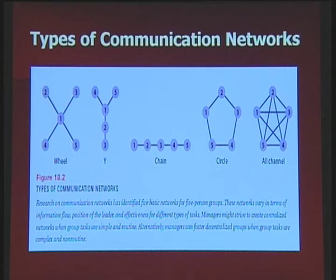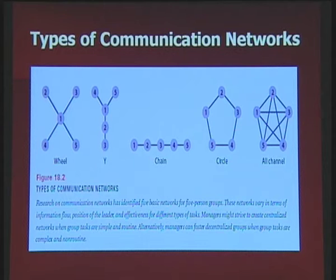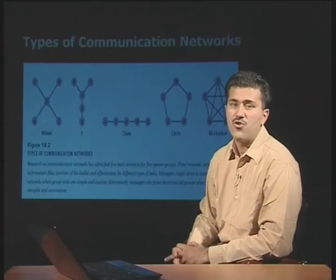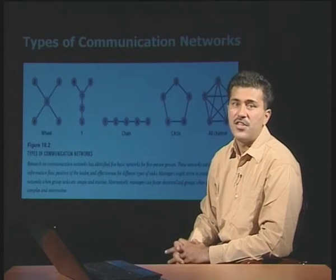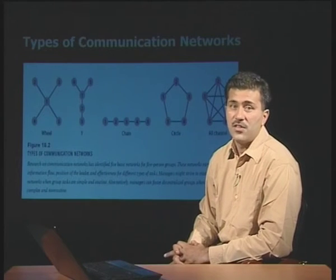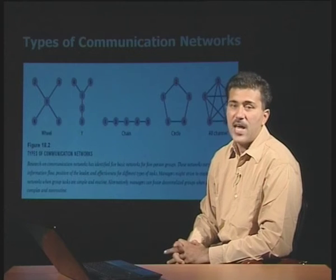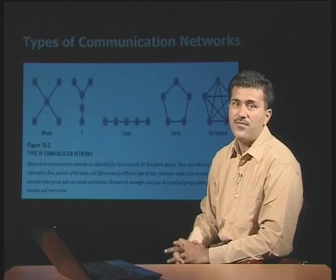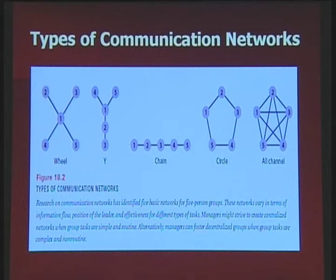The second network is the Y network — also a highly formal, centralized network. Number one is the boss. In this case, if number three wants to reach number one, he cannot come directly; he must first report to number two, and only when number two is satisfied can he reach number one. Meanwhile, four and five can directly come to number one. So four and five cannot directly talk to two and three — once again, centralized decision-making and communication.